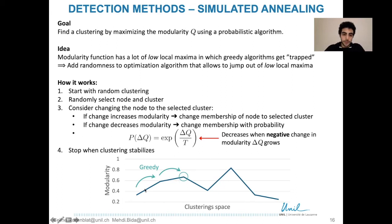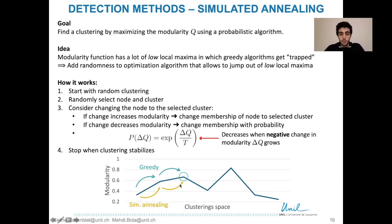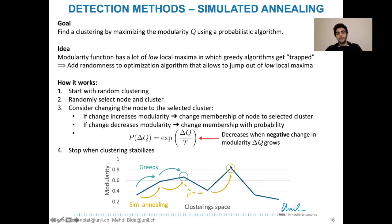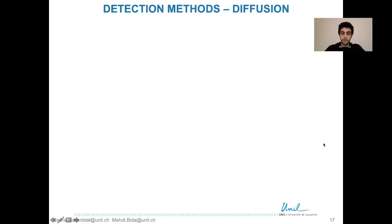In simulated annealing, we start the same way, but since we can go to lower states with some probability, it is likely that we pass through a lower state and then return to a higher, better local maximum. This is the advantage of simulated annealing — it usually leads to better results compared to greedy approaches.